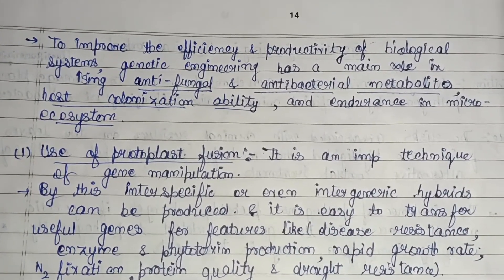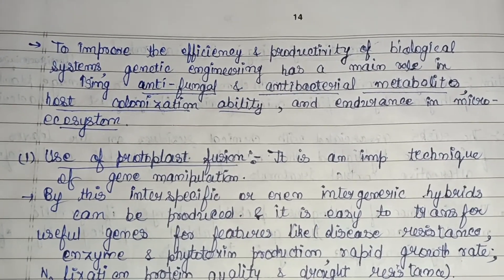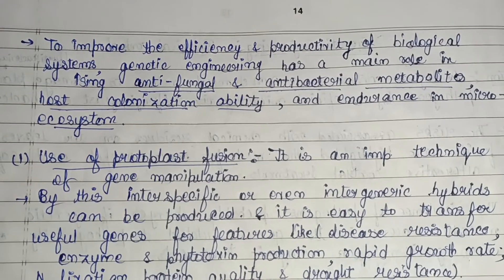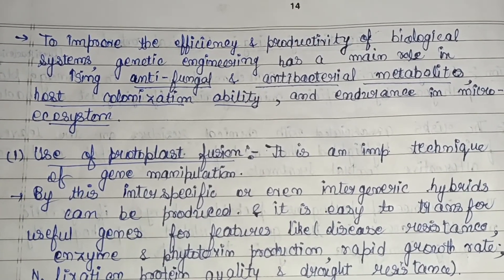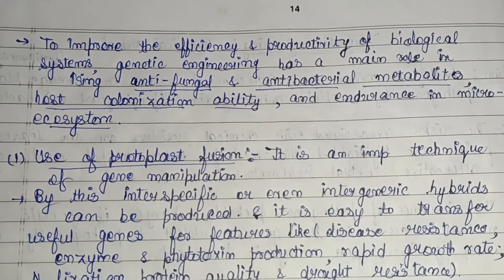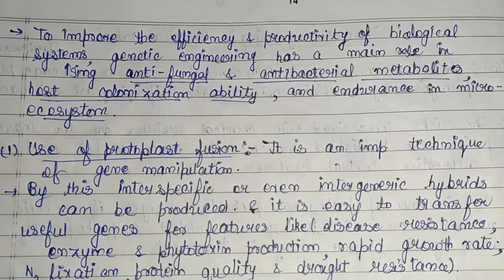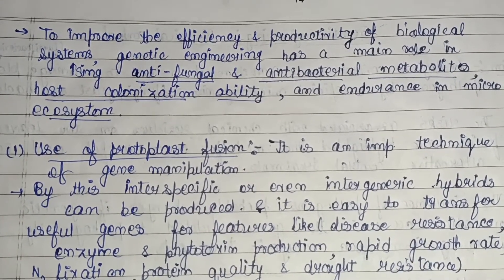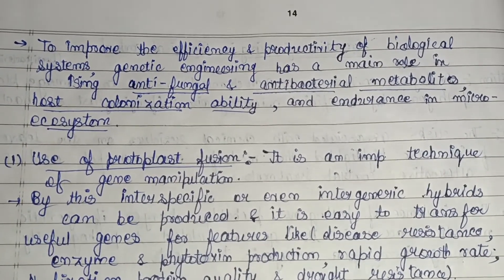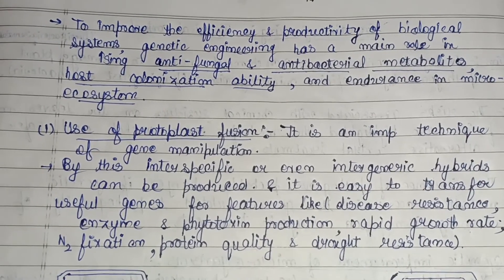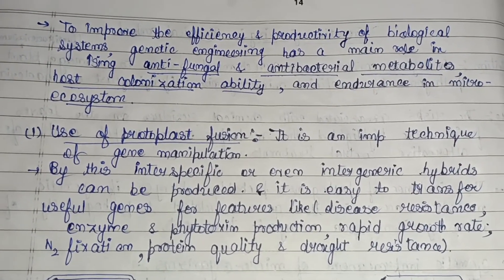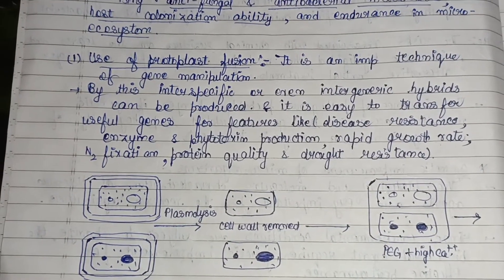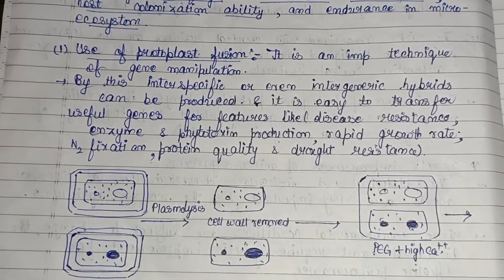To improve the efficiency and productivity of biocontrol agents, genetic engineering plays a main role in increasing anti-fungal and antibacterial metabolites. For example, if a fungal disease occurs in a plant, genetic engineering can increase anti-fungal properties. It also improves host colonization ability — the chances of the biocontrol agent colonizing the pathogen host — and endurance in the micro-ecosystem, meaning how well they adapt to their environment.